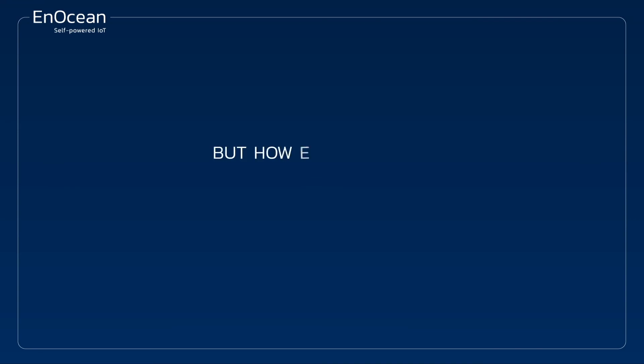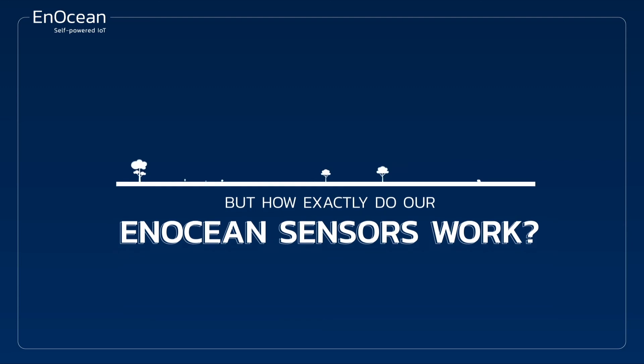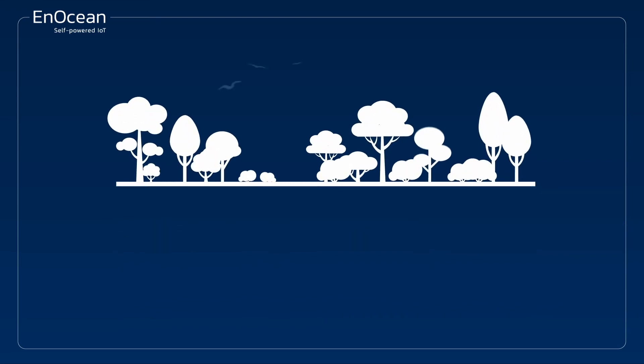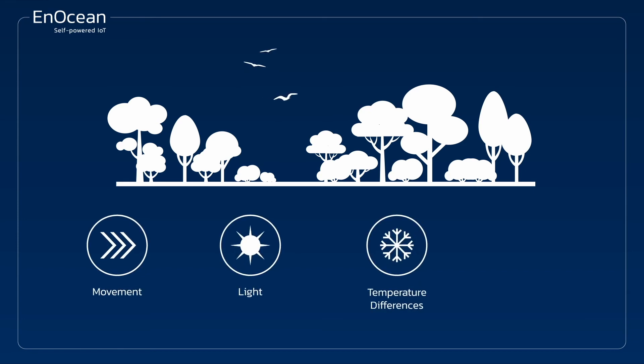But how exactly do our Enotion sensors work? Our patented energy harvesting technology allows our sensors to collect energy from movement, light, and temperature differences in their immediate environment in a sustainable, maintenance-free, and reliable way without having to change batteries.